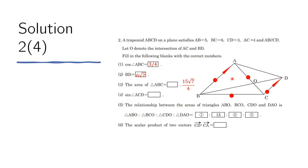Now we need to find the sine of angle ACD. To do that, we will use the sine law, which states that for a triangle with sides a, b, c and opposite angles A, B, C respectively, the ratios a/sin(A) = b/sin(B) = c/sin(C) hold for any triangle.